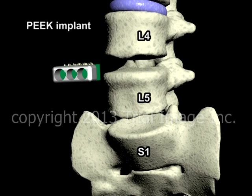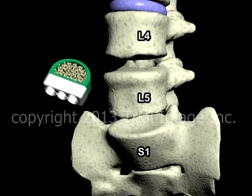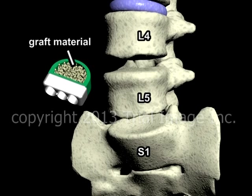Intervertebral implants contain hollowed-out spaces into which bone graft material is placed to stimulate fusion between the two vertebra. Most commonly, the graft material is termed an allograft, that is, bone which has been removed from cadavers, or taken from live patients during the course of joint replacement surgeries. Alternatively, the bone graft material may be autologous, that is, from the patient undergoing the spinal surgery, or composed of a synthetic material.